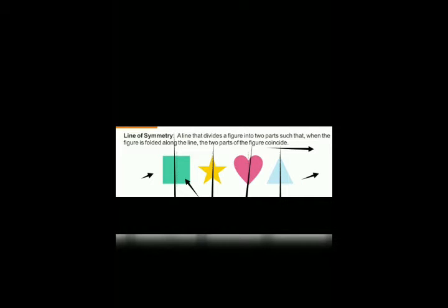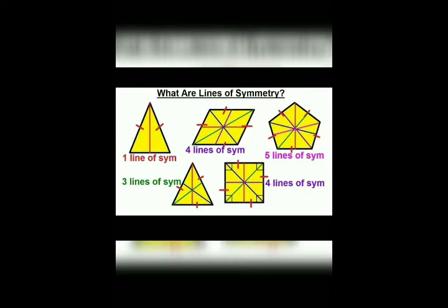Here are more examples of line of symmetry. In our first figure, the isosceles triangle — in this triangle both sides are equal, that's why we can draw only one line of symmetry. In our second figure, a quadrilateral, we draw four lines of symmetry. Next, the figure is a pentagon, so in a pentagon we can draw five lines of symmetry. In the equilateral triangle, all sides are equal, so we draw three lines of symmetry.